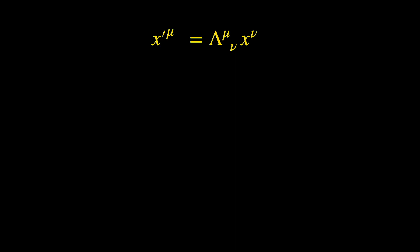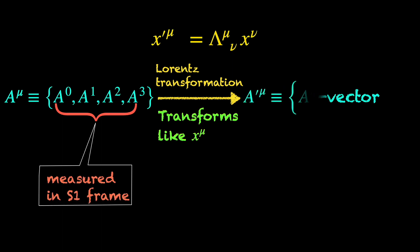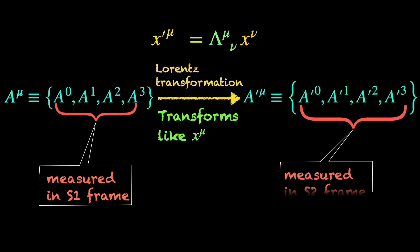in the sense that any four-component object that transforms like X mu under Lorentz transformation is a four-vector. What do we mean by transform-like? Measurement of this four-component object by the observers in two different inertial frames S1 and S2 will take two different sets of values which will be related by the same Lorentz transformation matrix that relates the two sets of space-time coordinates of S1 and S2 frames.